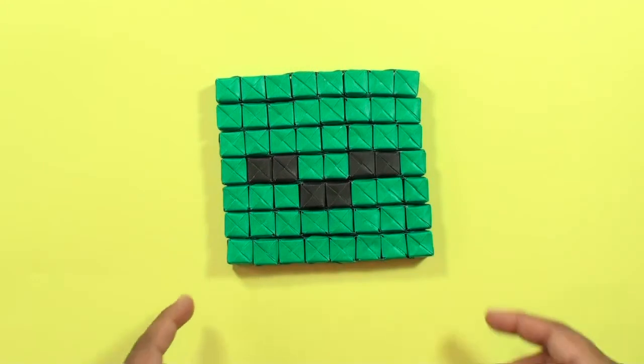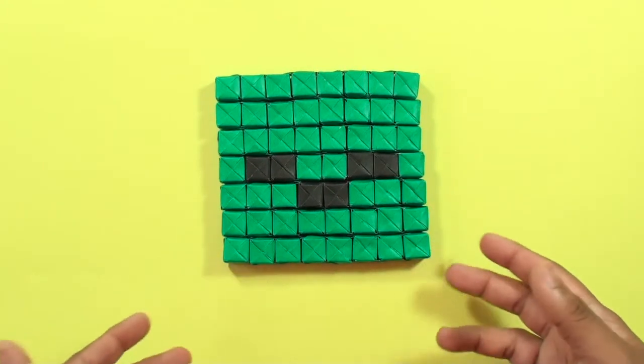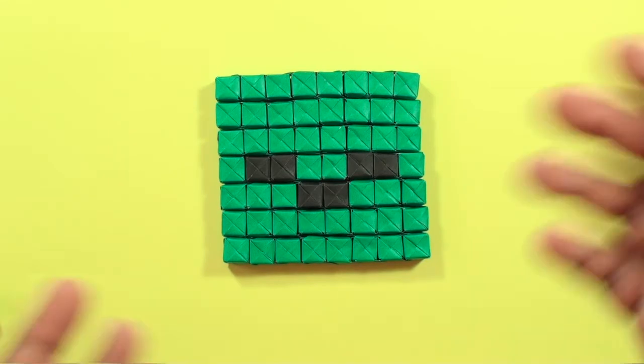If you want to add another row on top you can do that if you'd like, in which case it would be 64 units instead of 56.